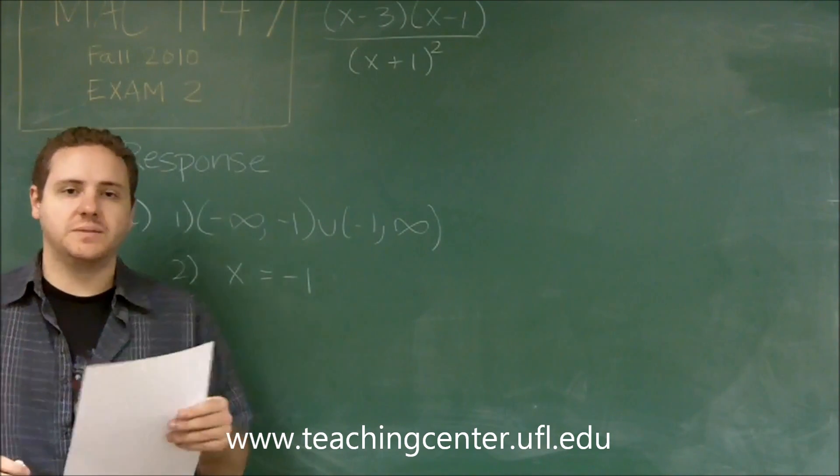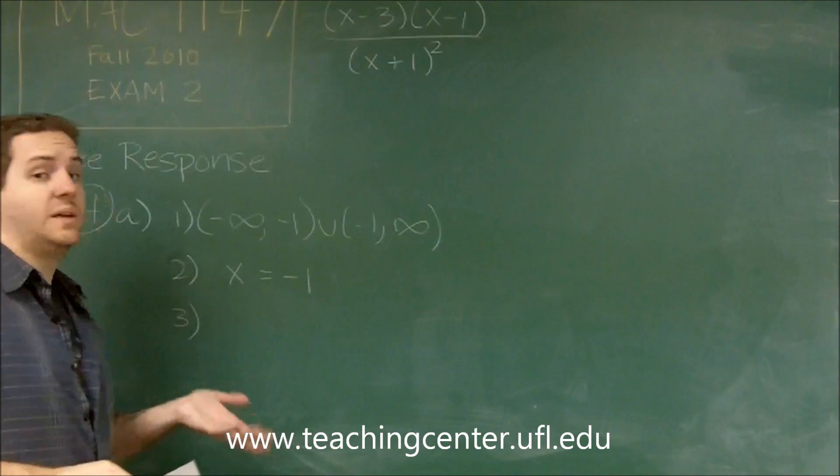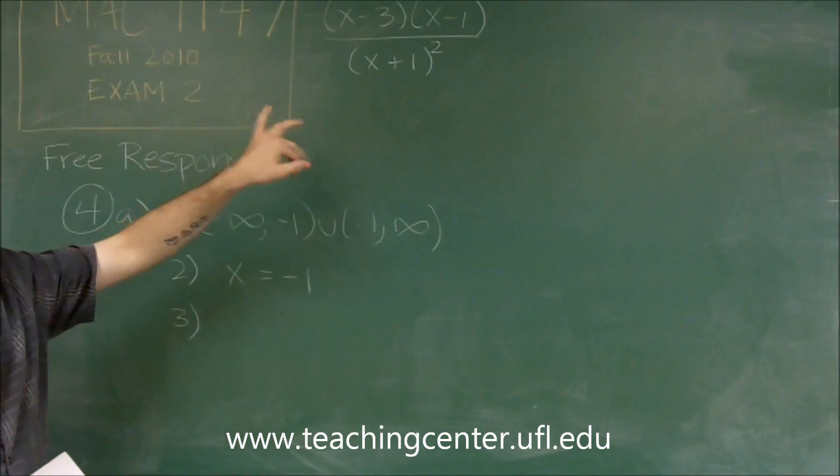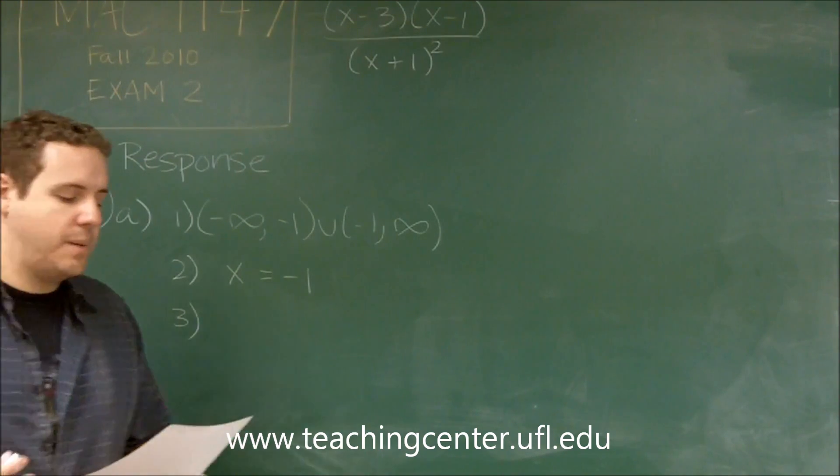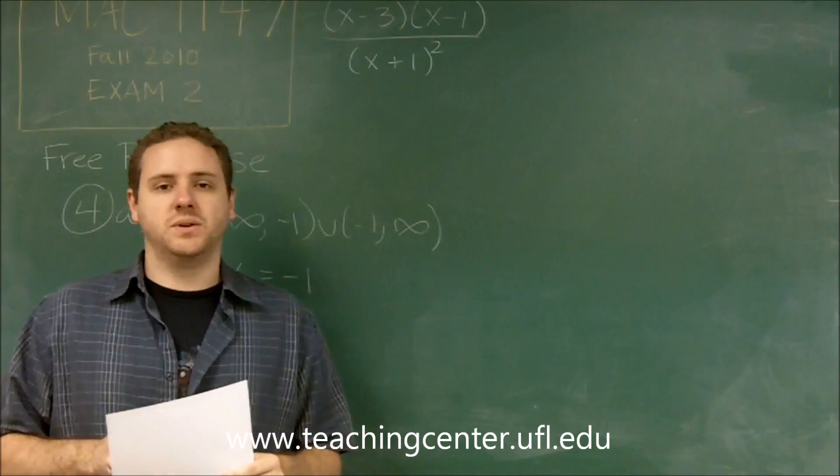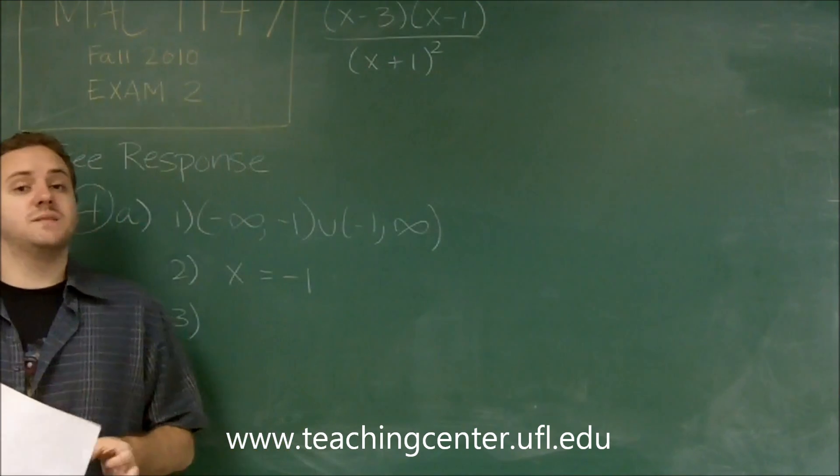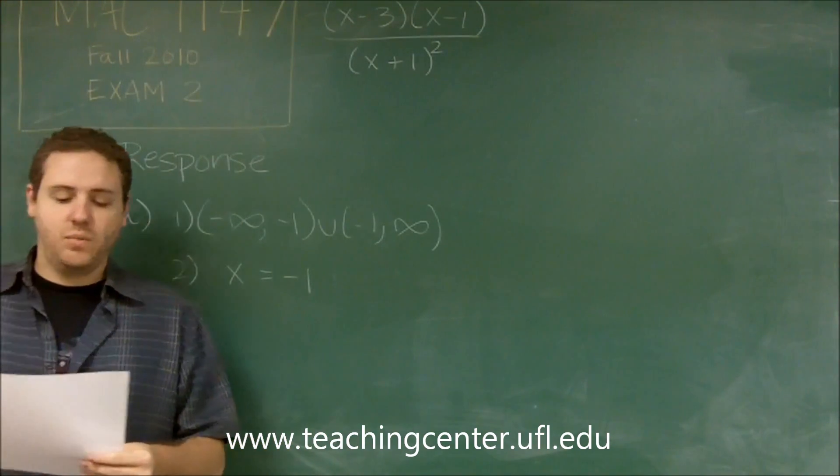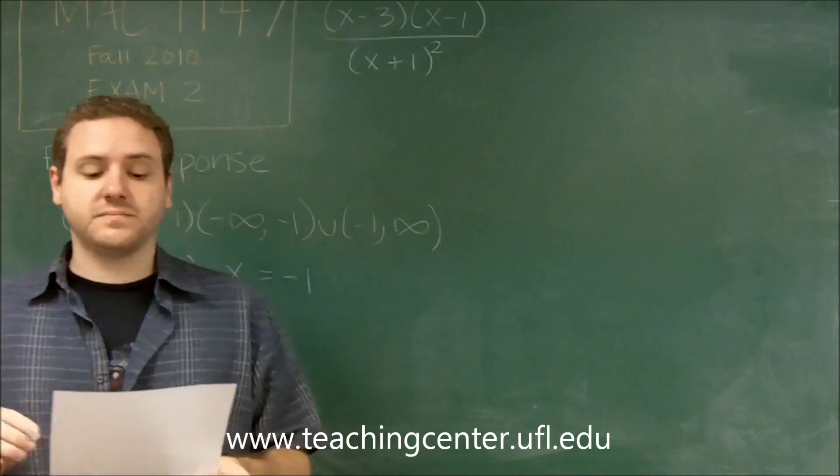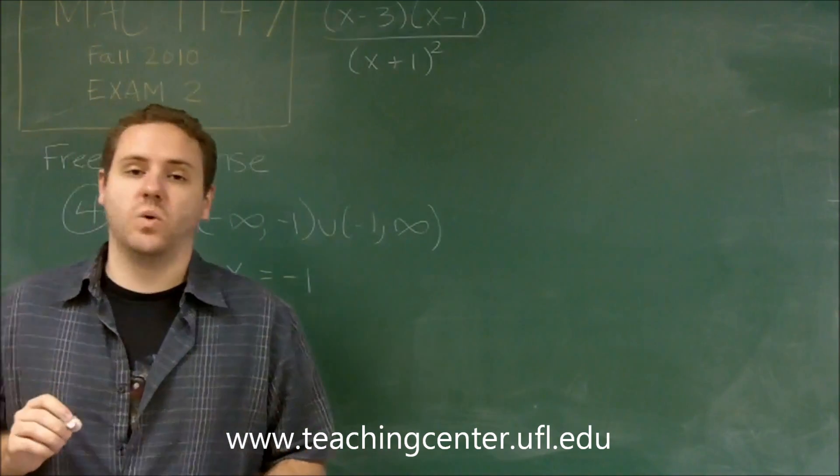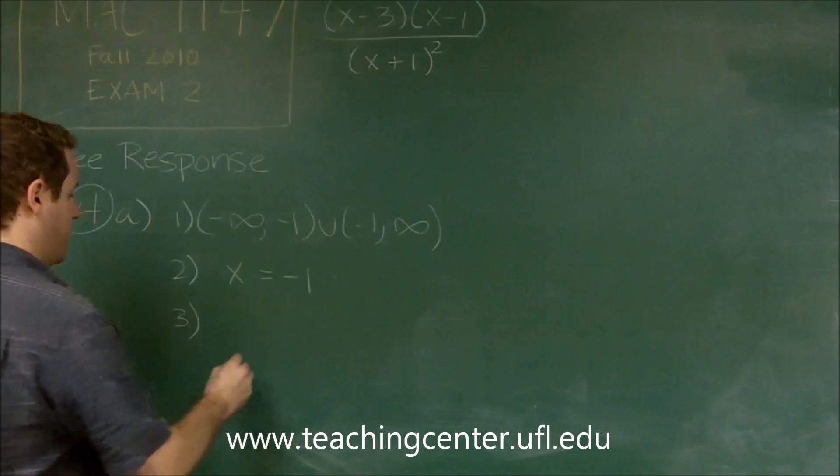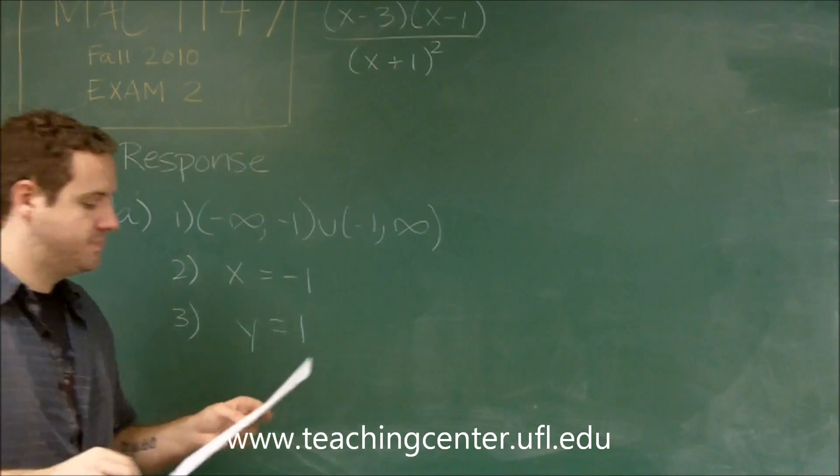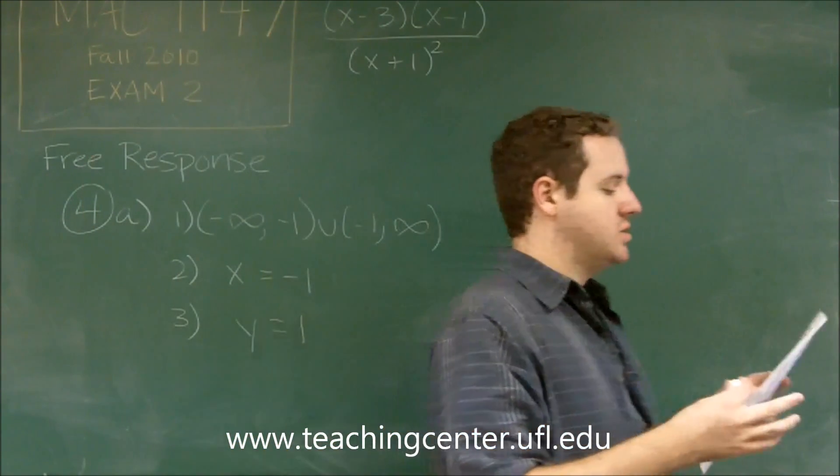Part 3 says the equation of the horizontal asymptote, so the horizontal asymptote is going to be y equals something. Since we have a rational function, all we need to look at is the degree. Our top and bottom have the same degree, degree 2. The rule for horizontal asymptotes is if you have the same degree, you just look at the coefficients on that highest degree term. Our coefficients were just 1 and 1, so 1 over 1 is 1. We get a horizontal asymptote of y equals 1.